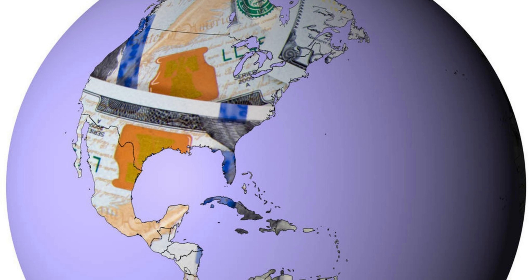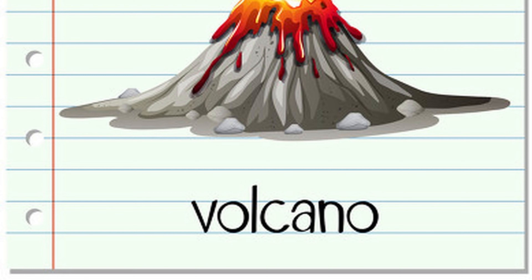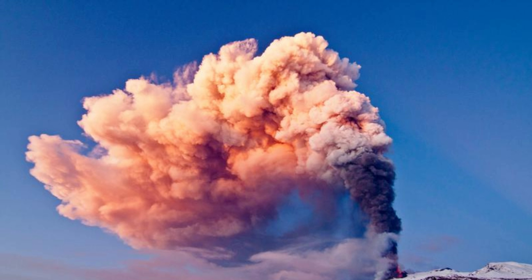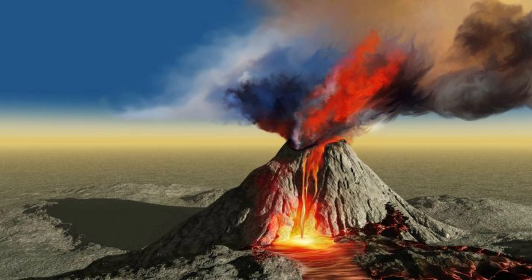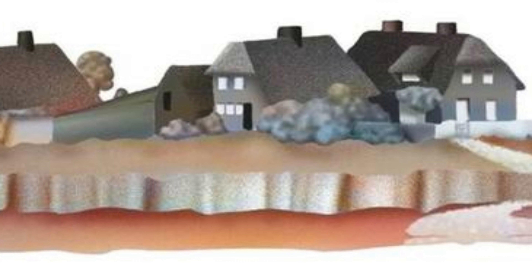For instance, the collision of continents can alter ocean currents and impact climate patterns. Volcanic activity is another essential component of geological cycles. Eruptions release gases and particles into the atmosphere, which can influence climate by reflecting sunlight and affecting atmospheric chemistry.